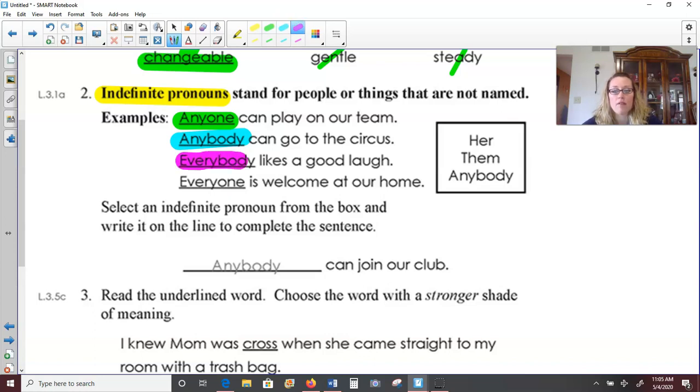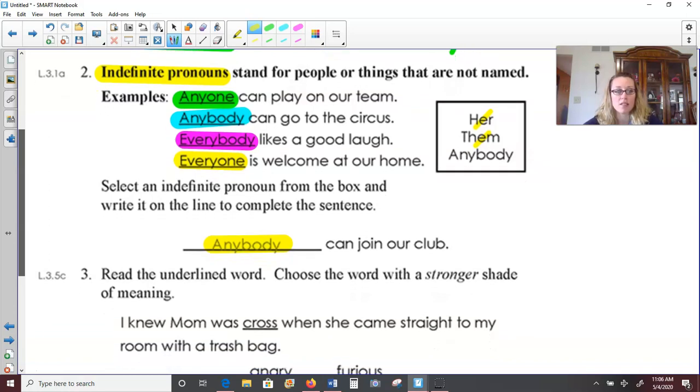And then on the same lines as that, we have everybody. Everybody likes a good laugh. Everybody. So that doesn't have a specific name to it. And then everyone, like, everyone is welcome at our home. So they wanted us to select an indefinite pronoun from the box and write it on the line to complete the sentence. Blank can join our club. Anybody can join our club. Yes, that sounds best. And it's also an indefinite pronoun because it's not really naming any specific person or group. But yet, it's still taking the place of people. So I know that might seem a little tricky or confusing. But we'll keep practicing with that in our future lessons.